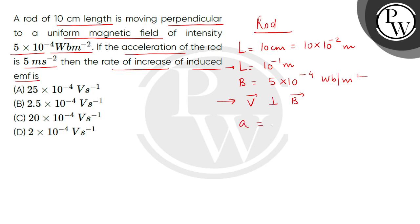Now acceleration in the rod is 5 meter per second square. Then we have to find the induced EMF rate of increase, which means we have to find dE/dt.